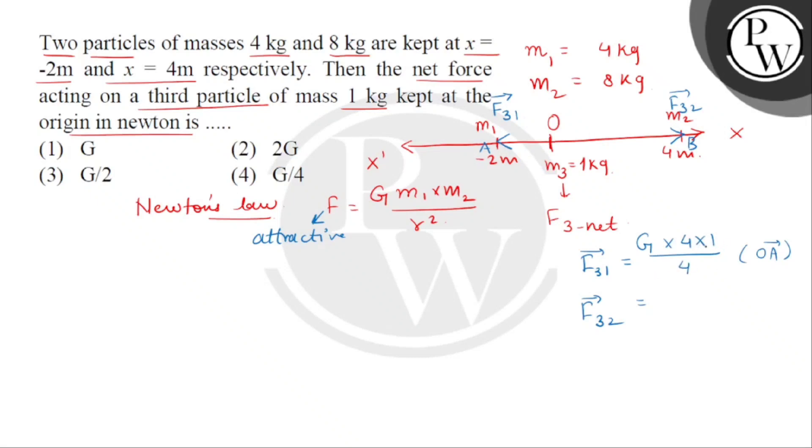Now, we will multiply the unit vector. Let that be R31 cap. Here we get magnitude-wise F31 as answer only G.